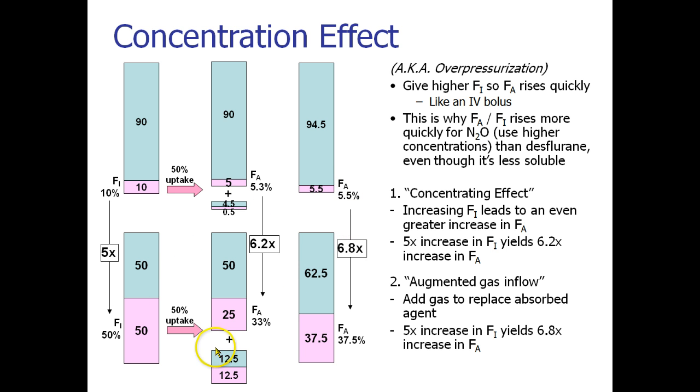Compare that over here when we replenish the deficit and add it all up. Now we have 37.5 parts of nitrous oxide and 62.5 parts of oxygen, which was 37.5% gas. And so what do we see here? We started with 5 times as much agent, but now we have 6.8 times as much agent when we compare. And all that we did is we started with a higher concentration. So all of that gobbledygook summarized basically says that if I start with a high concentration, I can generate even higher concentrations.